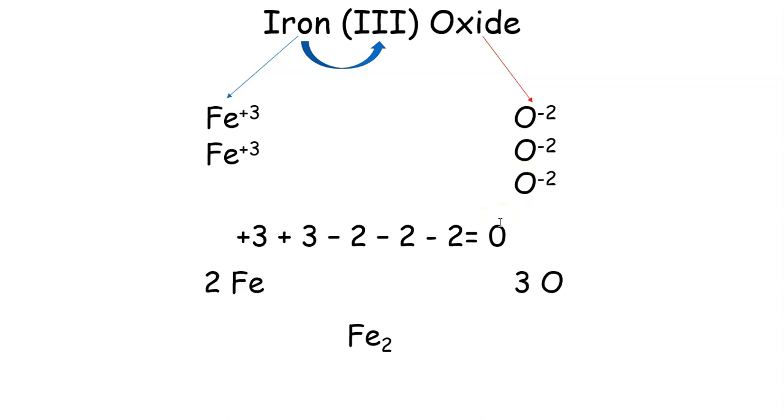Which means now what I can do because it equals 0 is I can count how many of each one I have. So I have one, two iron. So two Fe. I have three oxygens. One, two, three.